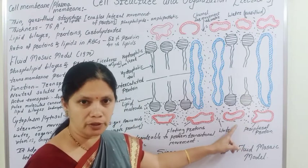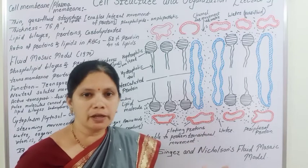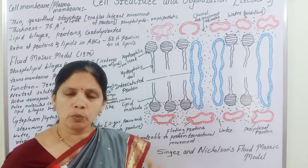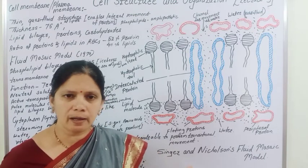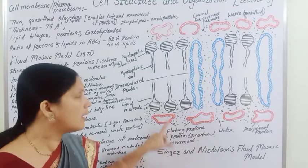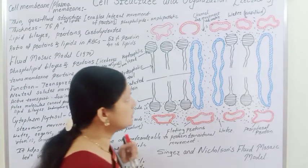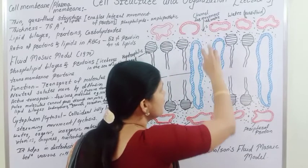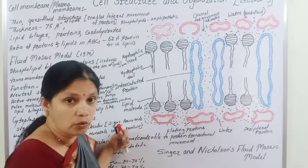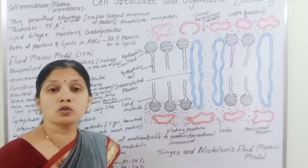The peripheral proteins, also called extrinsic proteins, are present on both sides of the phospholipid bilayer. These floating or extrinsic proteins are present on both sides of the membrane. Water is also present, at 20% by weight, along with enzymes.